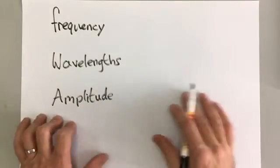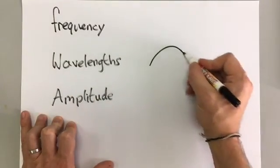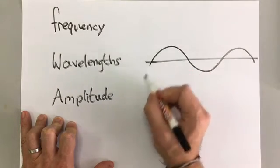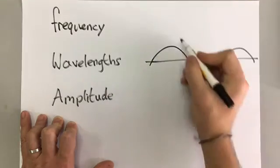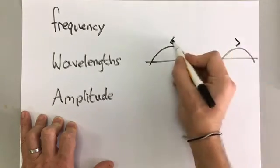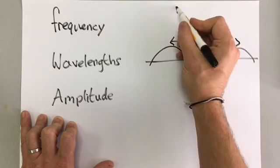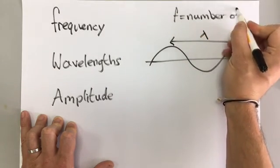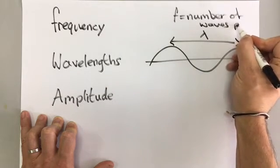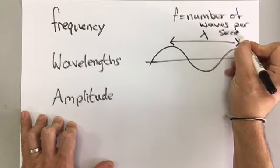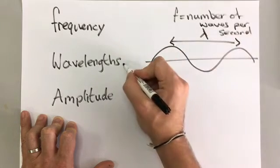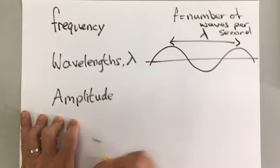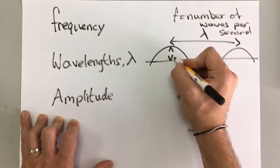If you remember from our diagrams earlier on in the waves unit, we can draw a wave like this and we can put a central line on there and we can say that the wavelength is the distance from one crest to another. The frequency is the number of waves per second and the amplitude is this bit here.